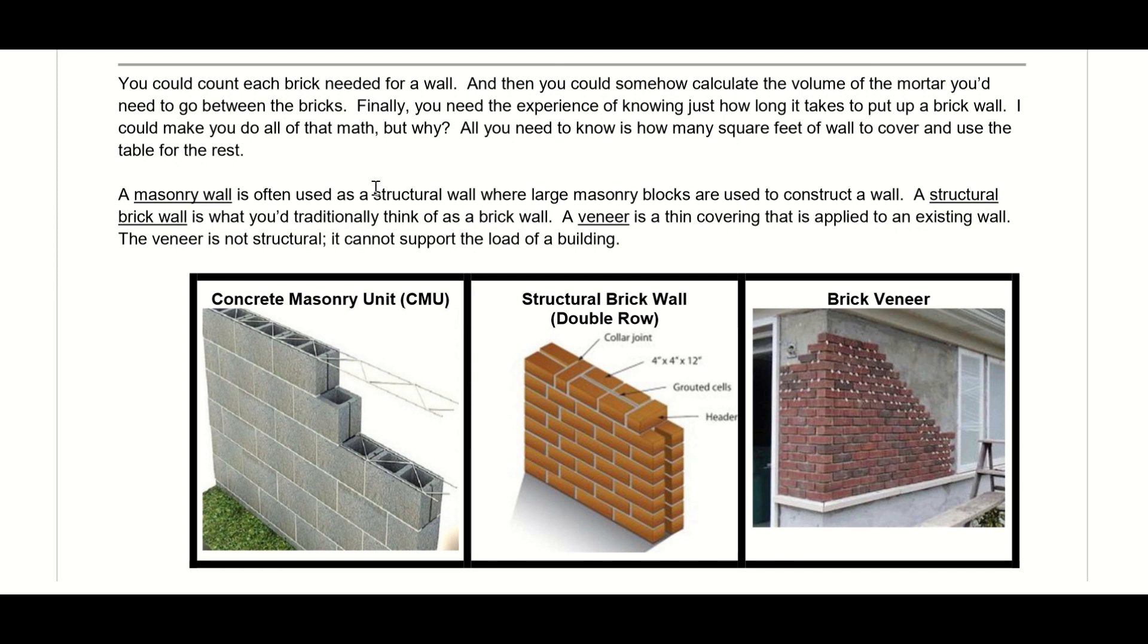There are three main types of masonry installation we're going to talk about. The first one is a concrete masonry unit, otherwise known as a cinder block. You'll see those around a lot. A lot of your shopping centers are built with a concrete masonry unit.